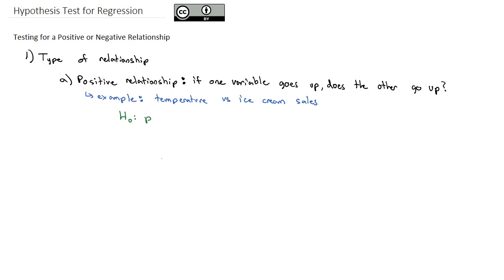And so when we do this, when we want a positive relationship, the null hypothesis is still rho equals 0, saying that there's no relationship. But now the alternative hypothesis is going to be rho is greater than 0, indicating that it is a positive relationship.